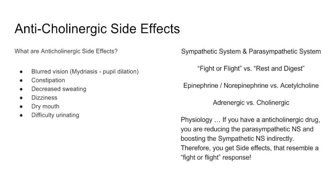It's very important to understand that because if you look at anticholinergic side effects — blurry vision or mydriasis which is pupil dilation, constipation, decreased sweating, dizziness, dry mouth — these are all the fight-or-flight responses we get when our sympathetic system is overflowing. Just by knowing that cholinergic is parasympathetic and adrenergic is sympathetic, and putting 'anti' in front of either one, you can figure out what some of the side effects are going to be. Anticholinergic side effects are pretty much our sympathetic fight-or-flight responses: dilated pupils, GI slowing, decreased sweating, dizziness, and dry mouth. Remember that and it'll help you out for the rest of your career.